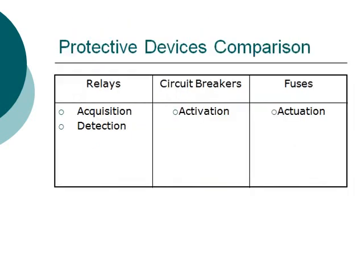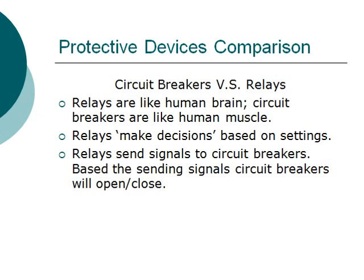A relay is like the human brain and a circuit breaker is like the human muscle — the relay makes decisions based on its settings, and sends a signal to the circuit breaker, which will then open or close based on that signal.